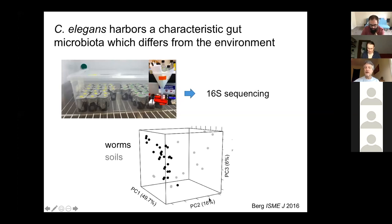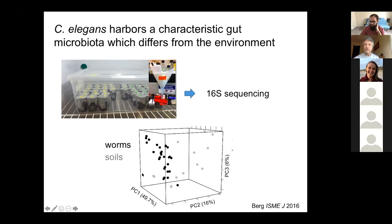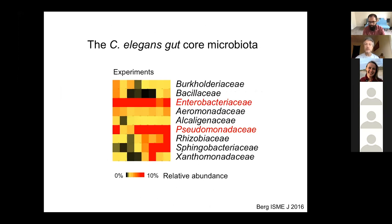When we do that many times, starting with microcosm environments that are very distinct — each represented by a dot in this principal coordinate analysis — you can see that soil microbiomes fill a three-dimensional cubic region, while the worm microbiomes (shown as black dots), with several replicates per soil microcosm, fill a more restricted part of this space that seems to represent more of a plane. So the microbiomes of the worms are distinct from those in the environment and cluster together, suggesting a characteristic gut microbiome composition.